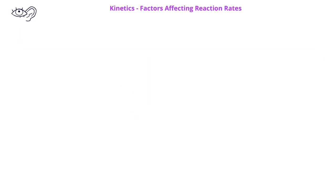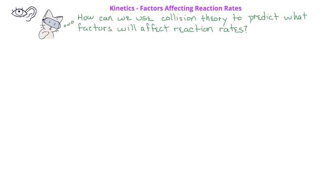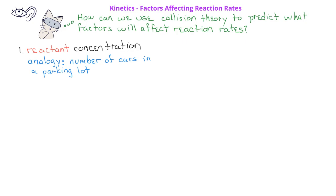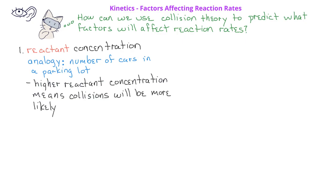Now we can think about specific factors that impact reaction rates and how they relate to collision theory. The first is reactant concentration. If you have two cars in a very empty parking lot, they're unlikely to collide. But if you have many cars, a small collision is more likely. Similarly, if we have more reactant particles in a given volume, collisions are more frequent — increasing concentration increases collision frequency, which increases the reaction rate.